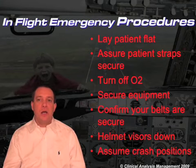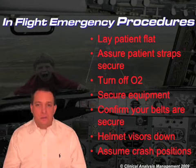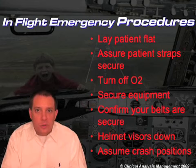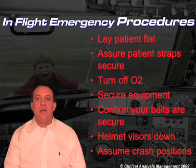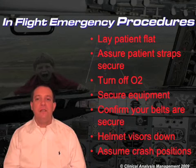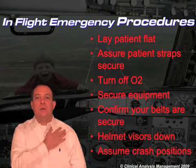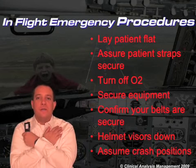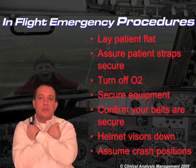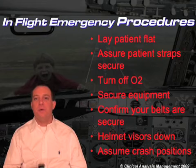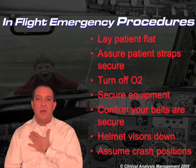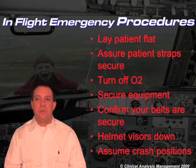When we talk about crash positions, there are two. The first is the old lean-forward, kiss-your-butt-goodbye, wrap-your-arms-around-your-legs position — that's used if you only have a lap belt. If you're in a seat with more than a lap belt, or in an aft-facing seat, you cross your arms across your chest, put your feet in front of you, and especially if you've got shoulder straps, hold onto those shoulder straps.